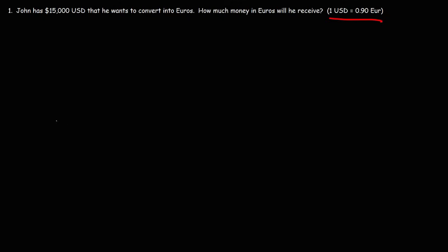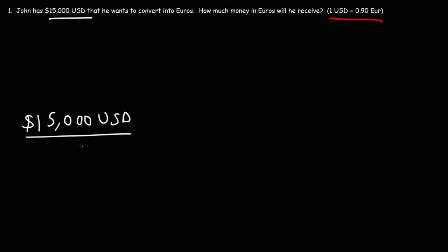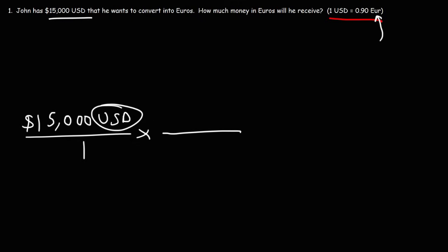Let's convert it. Start with what you're given — we're going to write that number on the numerator of a fraction. In the next fraction, we're going to put the exchange rate. We want the unit US dollars to cancel, leaving behind the unit euros. There are two parts to this equation: one US dollar and 0.9 euros. One will go on top of the fraction and the other on the bottom.